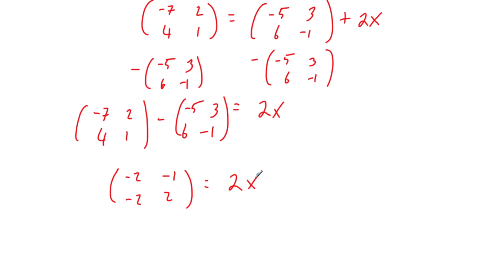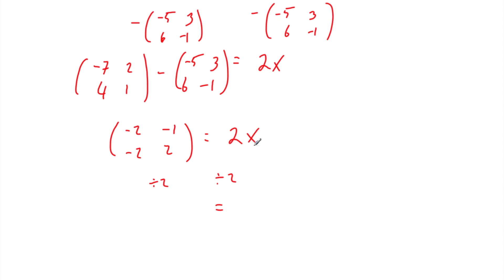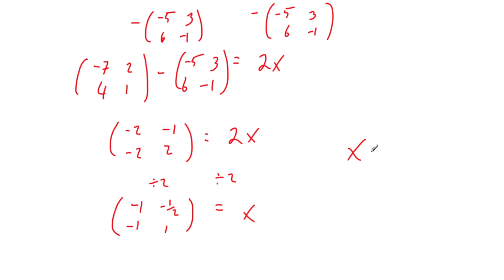Now we've got multiply by 2 here. It's a scalar so we can divide both sides of the equation by 2. On the left-hand side we're dividing a matrix by a scalar so we divide each element by 2: -2÷2=-1, -1÷2=-½, -2÷2=-1, and 2÷2=1. So x is equal to [-1, -½, -1, 1] and that's it.